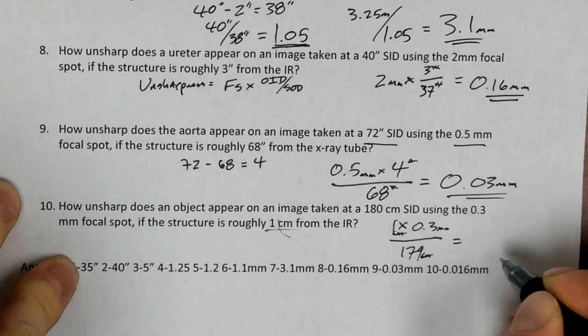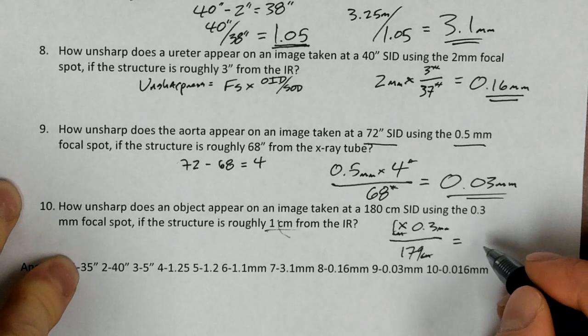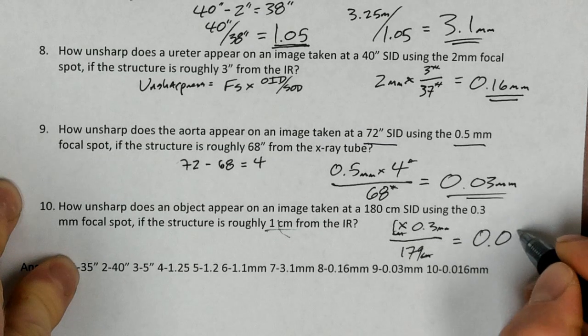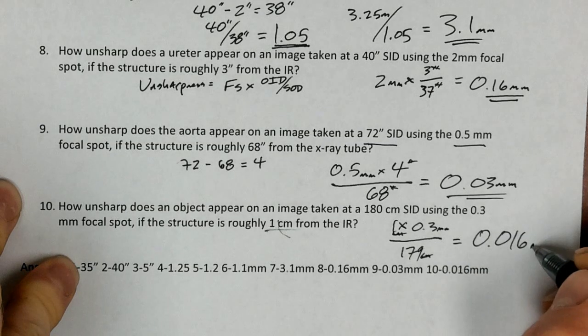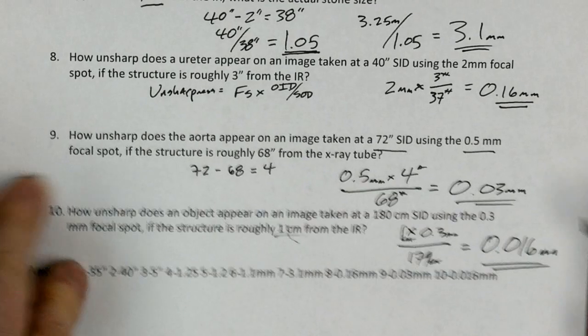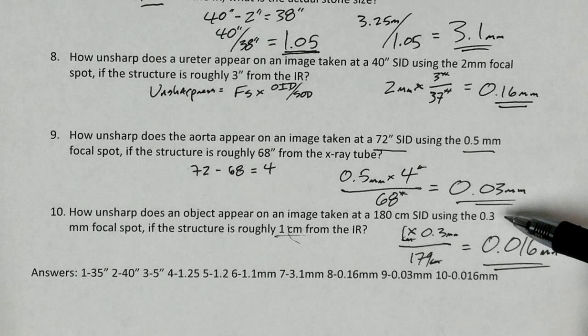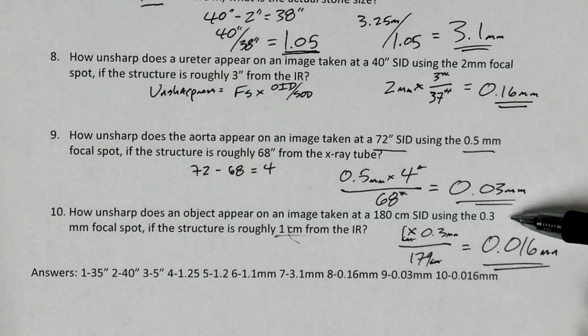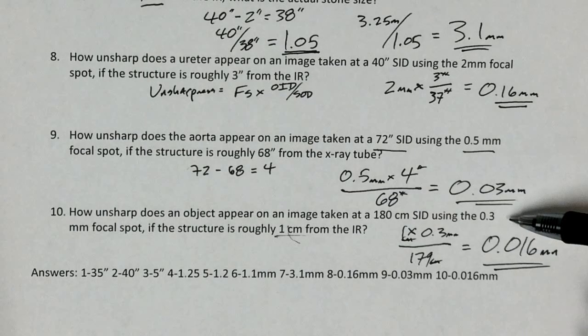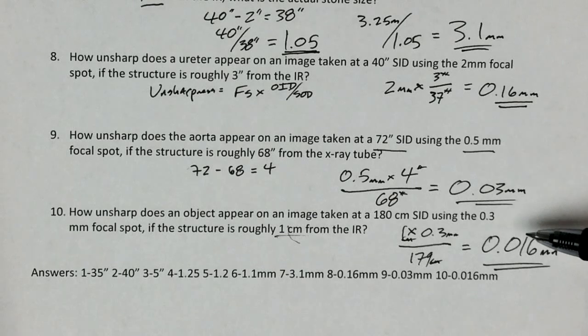All we're left with is millimeters. And when we work this all out, we're going to get 0.016 millimeters. So again, even less unsharpness, so better sharpness, using a much smaller focal spot size, so something that's generally used in, like, cardio cath and stuff like that. Most of our x-ray tubes don't actually have focal spot sizes this small. But hopefully this is helpful.